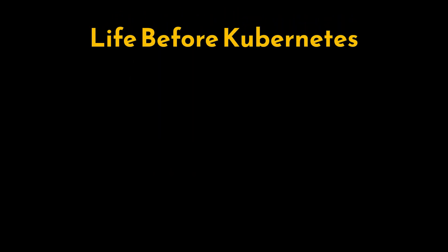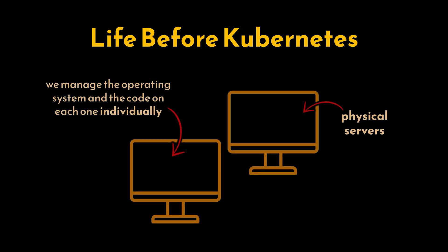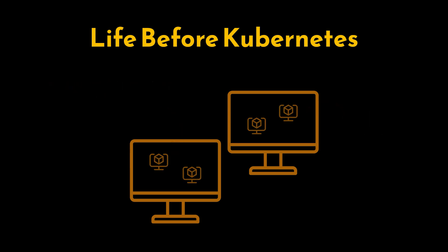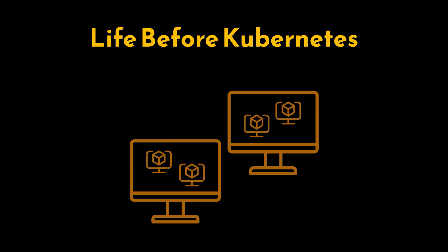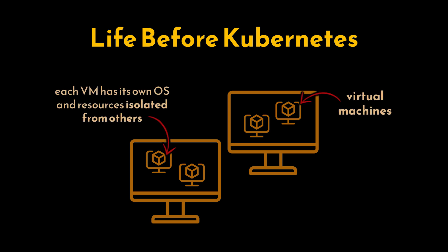Let's begin by discussing life before Kubernetes — a situation many of us might be experiencing right now. In a traditional deployment, we would push our code to physical servers in a data center, managing the operating system and the code running on each server. Another environment we may use is virtual machines. VMs provide a way to run multiple instances on a single physical server, each with its own OS and resources isolated from others, offering flexibility and better resource utilization.